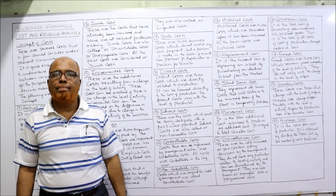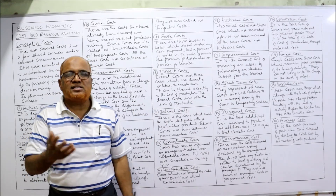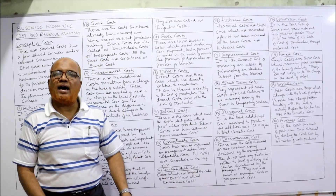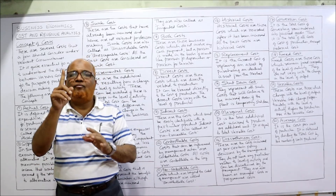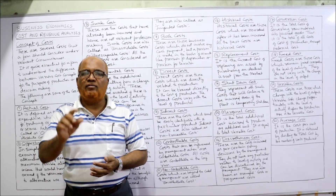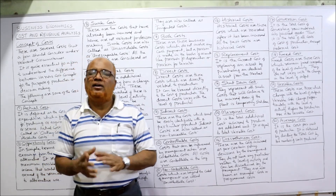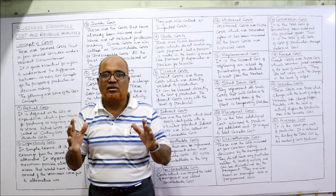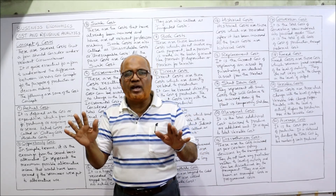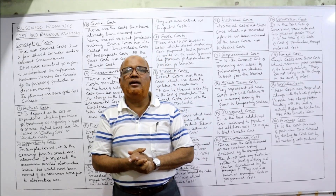An example of variable cost is material — if we want to produce more goods, more material is required; if we produce less, less material is needed. An example of fixed cost is rent — whether there are sales or not, whether there is production or not, rent has to be paid. Finally, average cost means the cost to make one unit. To calculate average cost, take the total cost divided by the number of units produced and you get the average cost. In total, 20 different types of costs have been explained here. This is not an exhaustive list — many more types exist — but these are the important ones. Hope the concept is very clear. This question will be frequently asked in examinations. We will take up the next topic in the next video.